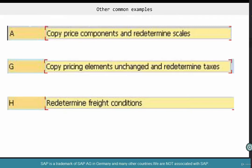Let's look at some other common examples. Pricing type A is also a very commonly used pricing type. And just by the description of it, you can probably understand what it does.